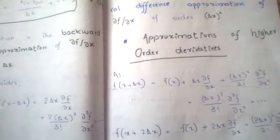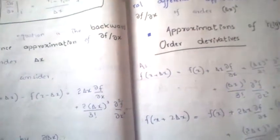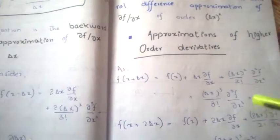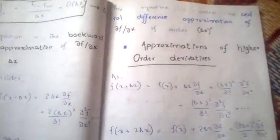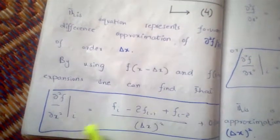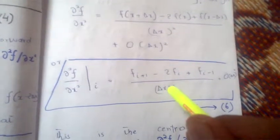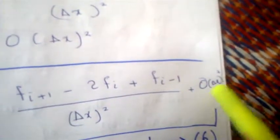Assalamu alaikum, welcome — high-tier students of mathematics, physics, and engineering. This is Part B of the first lecture on Computational Fluid Dynamics. In this lecture we will find the approximations for higher-order derivatives: first, a forward difference approximation for ∂²f/∂x² of order Δx; next, a backward difference approximation of the same derivative, also of order Δx; and finally, a central difference approximation of order Δx².